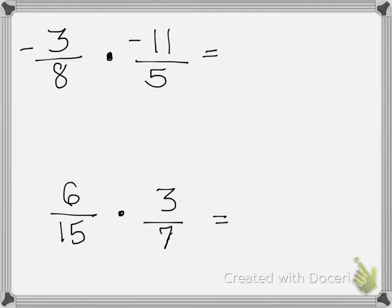Looking at this next example. Negative 3 and 5. Is there a number that can divide into both of those? No! Is there a number that can divide into 8 and negative 11? No! So then we'll just multiply our numerators straight across from each other and multiply the denominators straight across. So negative 3 times negative 11 gives me a positive 33, and 8 times 5 gives me 40.